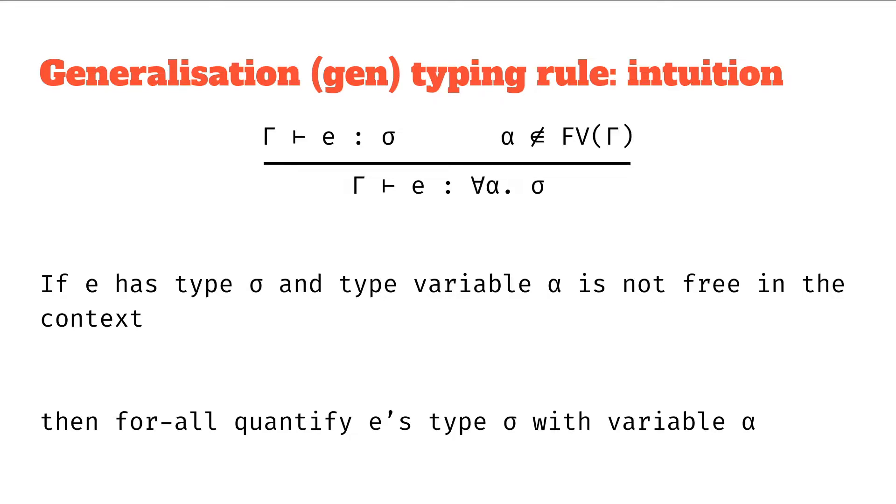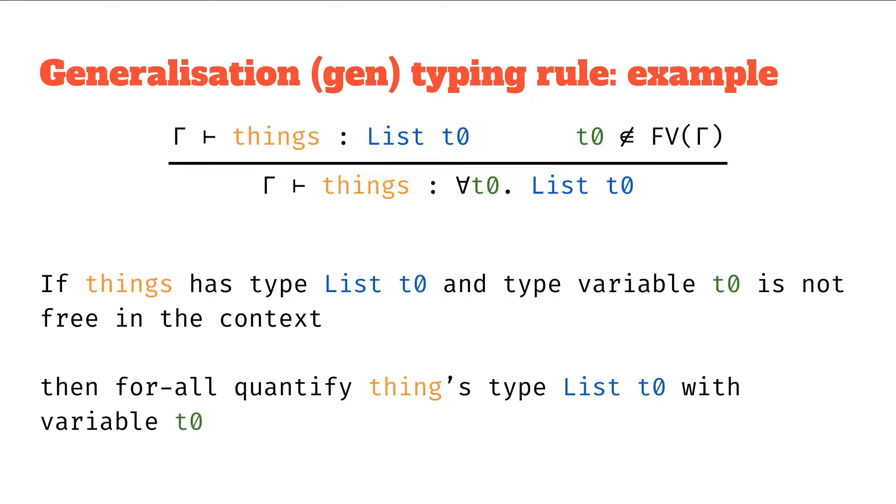To make that a bit more concrete without a full example, we can try out substituting some sample values in. Let's say we have a list of things, so we're going to call this things, and it's a list of things, we don't quite know what they are.